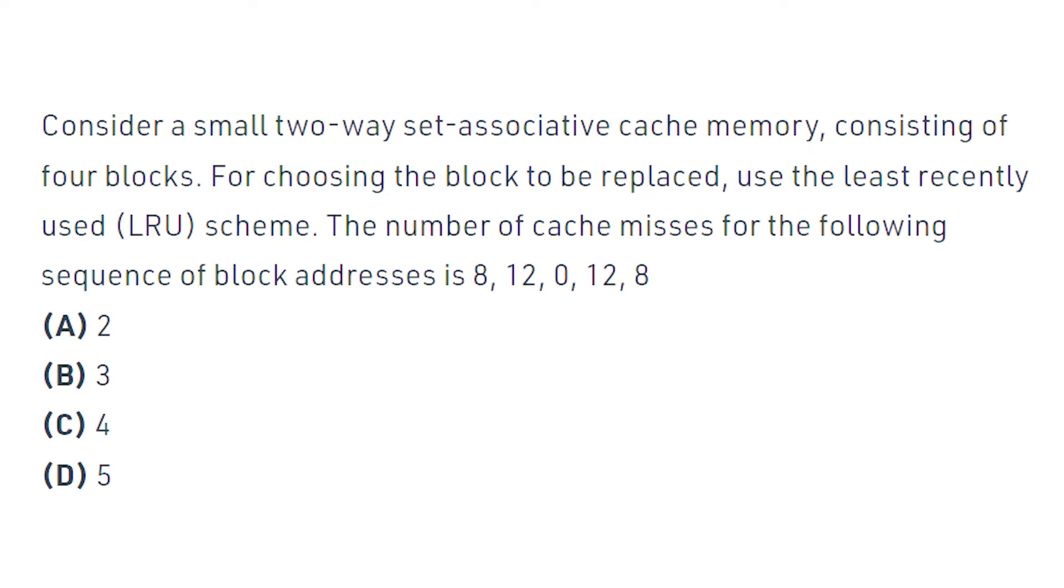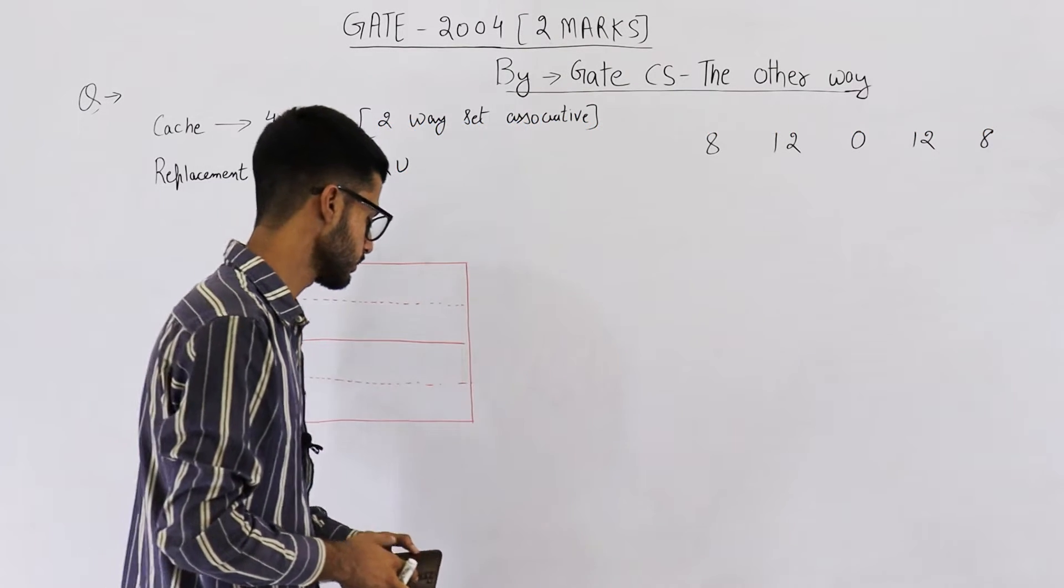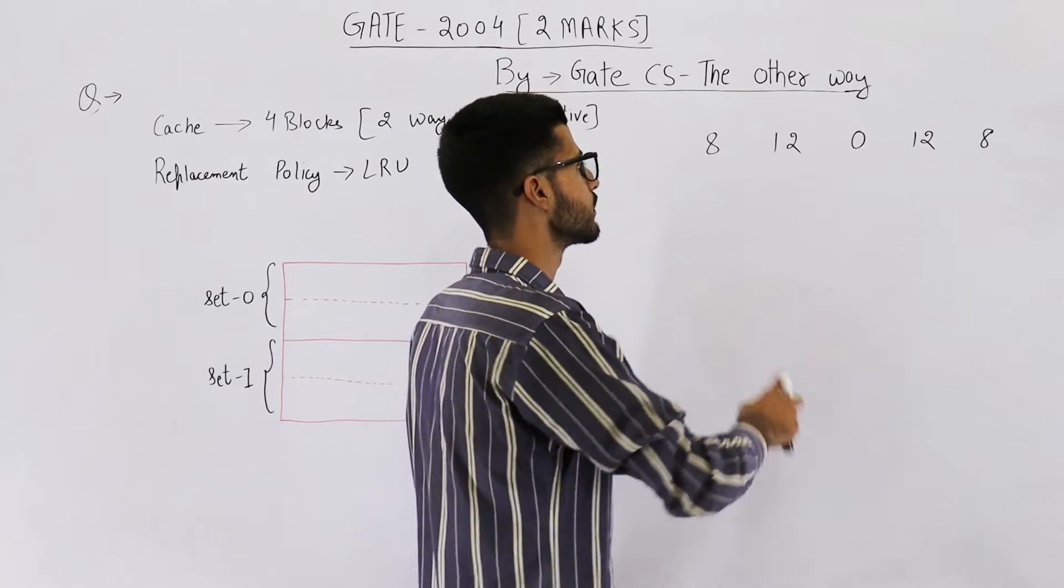Consider a small two-way set associative cache memory consisting of 4 blocks. For choosing the block to be replaced, use the least recently used scheme, which is LRU. The number of cache misses for following sequence of block addresses is: the sequence is 8, 12, 0, 12, 8. So I've noted down this sequence given in question.